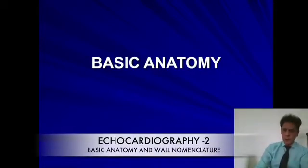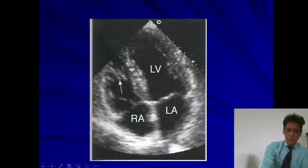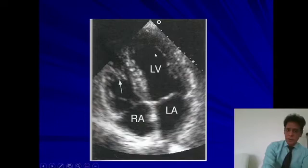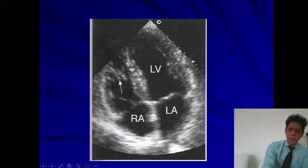Going on to the basic anatomy, you can make out that this is the right side and we have the right ventricle on this side, this is the left ventricle and this is the left side. We have these two atria, and until and unless there is situs inversus, usually the right atrium is on the right side and the left atrium is on the left side.